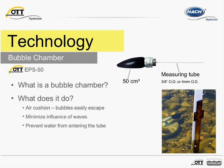Only during extreme cases where the water level increases by 10 feet or more in a short measuring interval would you find water that has actually entered the tube. If a bubble chamber is not used, water may rise into the tube after bubbles have escaped. If water is inside the tube during the pressure reading, the measurement may not reflect the true stage value or level value.